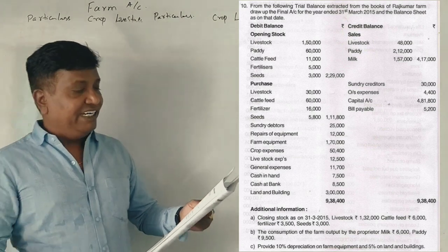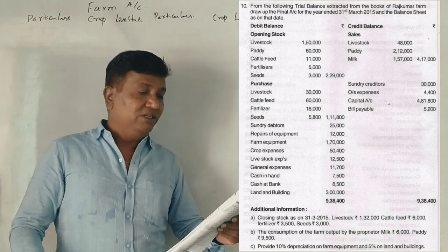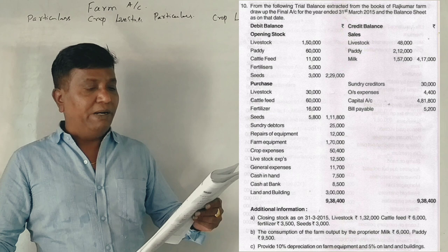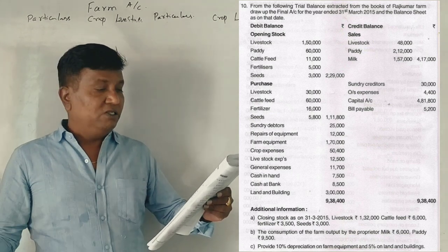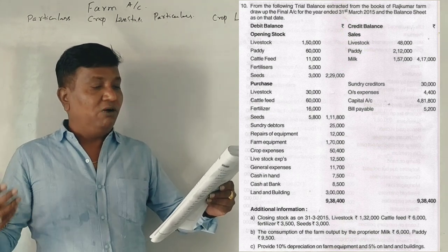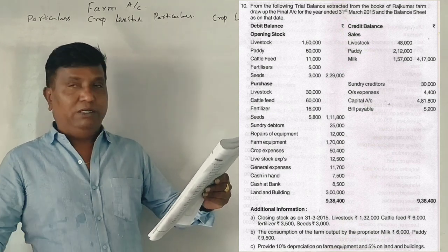Right side — credit side. Sales: livestock, paddy, milk. Credit also: outstanding expenses, capital account, bills payable.